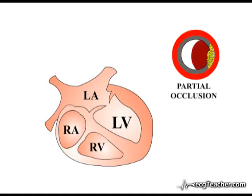In contrast, partial occlusion of a coronary arterial vessel results in an incomplete reduction of arterial supply to a region of myocardium. Ischemia in the area supplied by the partially occluded vessel — illustrated here in the lateral wall of the left ventricle — is primarily targeted on the subendocardial aspect of the affected region. In the great majority of cases, this does not result in ST segment elevation on the ECG.